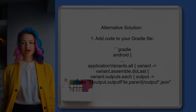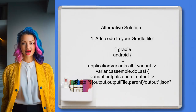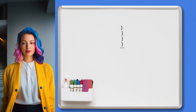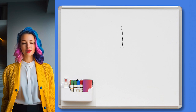Another user suggests that you can automatically delete the output.json file after a successful build. To do this, you need to add a specific code snippet to the Android section of your Gradle file.